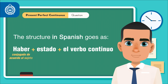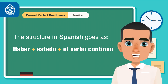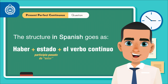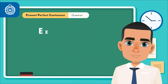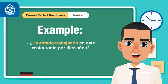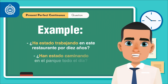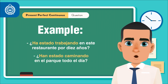Haber, conjugado de acuerdo al sujeto, más estado, el participio pasado de estar, más el verbo continuo: -ando, -endo. For example: 'Ha estado trabajando en este restaurante por diez años.' 'Han estado caminando en el parque todo el día.'